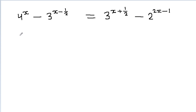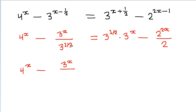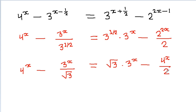Here we can write this as 4 to the power x minus 3 to the power (x minus 1/2), where 3 to the power (x minus 1/2) is 3 to the power x divided by 3 to the power 1/2, which is root 3. And 3 to the power (x plus 1/2) can be written as root 3 times 3 to the power x. Also, 2 to the power (2x) divided by 2 is 4 to the power x divided by 2. Now we have 4 to the power x and 3 to the power x, so we can separate these two terms.